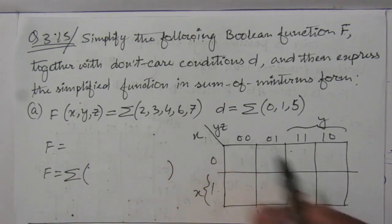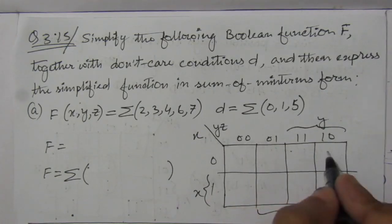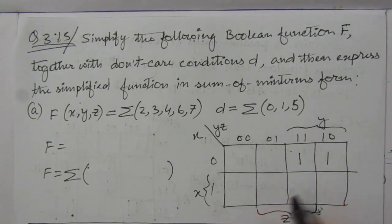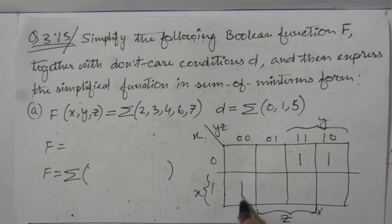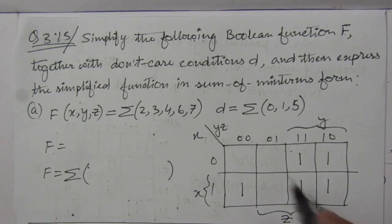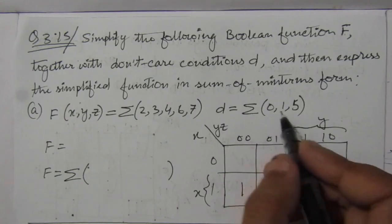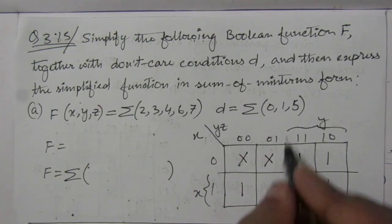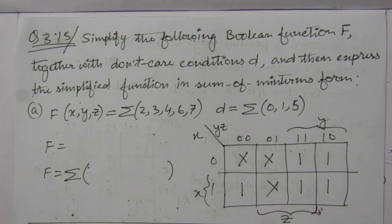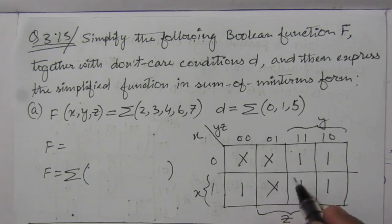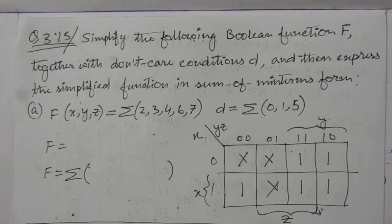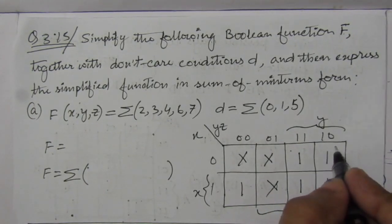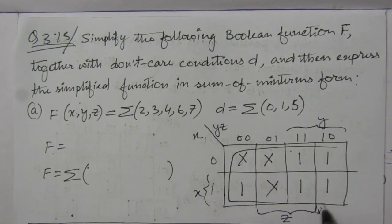The minterms are 2, 3, 4, 6, 7. Positions 0, 1, 2, 3, 4, 5, 6, 7 are placed. The don't care conditions are 0, 1, and 5. Position 0 is this one, position 1 is this one, and position 5. The don't care condition is shown by the cross symbol, because don't care can be considered either 0 or 1.